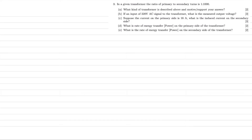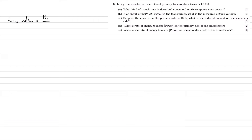We're given a transformer with a turns ratio of 1 to 1000, and specifically we're told this is a primary to secondary ratio. Let me clarify that this is not the turns ratio but a ratio of primary to secondary. Remember what turns ratio means — turns ratio refers to the ratio of the secondary to primary, that is the number of windings on the secondary side divided by the number of windings on the primary side.